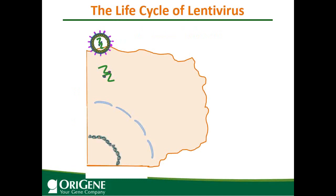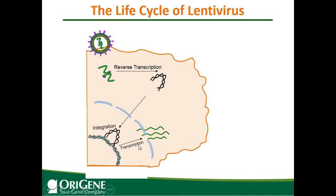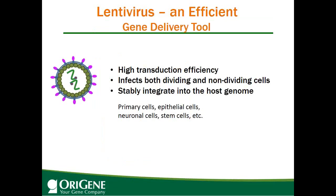This shows the life cycle of a lentivirus — that's the normal wild-type lentivirus, not the lentiviral vectors. Upon entering into host cells, the RNA genome is reverse transcribed into double-stranded DNA, and then integrated into the host genome. The viral genome is transcribed and assembled into viral particles.